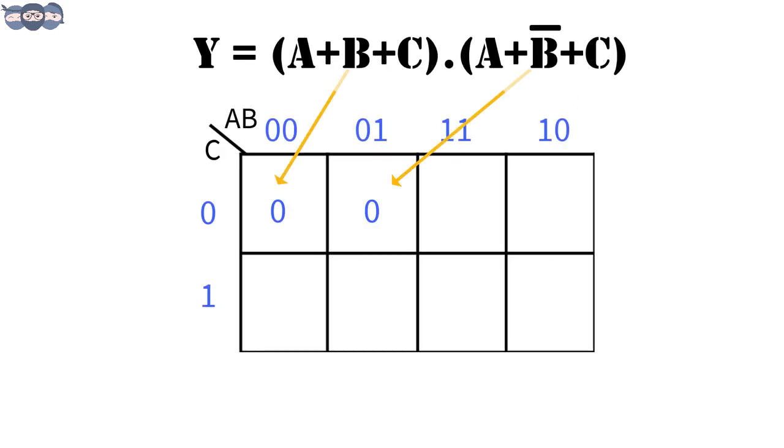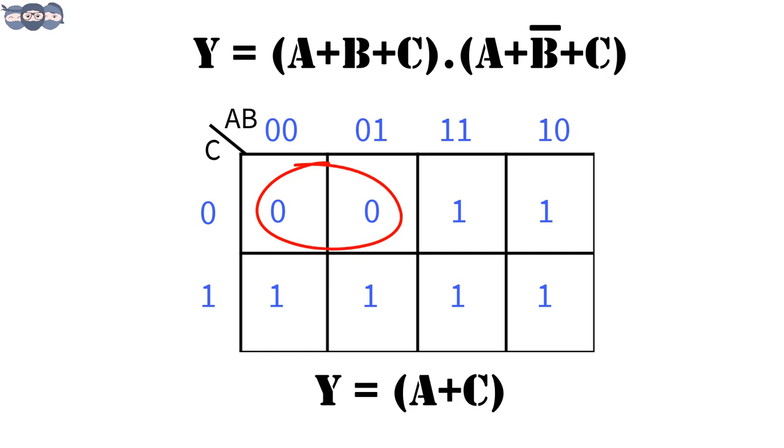Well, that is how you group elements as sum of product. However, when presented with the product of sum expression, it is not at all difficult to solve it. Simply place a 0 for each sum term in the kmap and group adjacent 0s. The simplified expression is a product of sum.